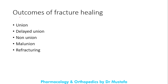We have multiple outcomes of fracture healing. We either get the fracture to heal back to normal — that's what we call union, where the bone goes back to normal before the fracture occurred. We have delayed union, when the time for the fracture to heal is prolonged but still heals back to normal. Or the fracture does not heal — that's non-union. Or the fracture heals but not in the normal anatomical position — that's malunion. The final type is refracturing, when the fracture heals but fractures again.